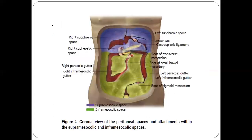A coronal view of peritoneal spaces and attachments within the supra-mesocolic and infra-mesocolic compartments is demonstrated in a schematic diagram, which includes the right subphrenic space, right sub-hepatic space, left subphrenic space, lesser sac, gastrosplenic ligament, root of transverse mesocolon, root of small bowel mesentery, bilateral paracolic gutters, bilateral infra-mesocolic gutters, and root of sigmoid mesocolon.